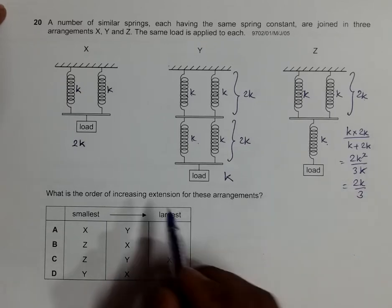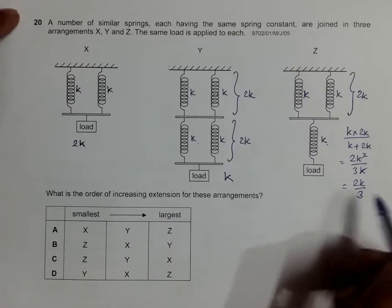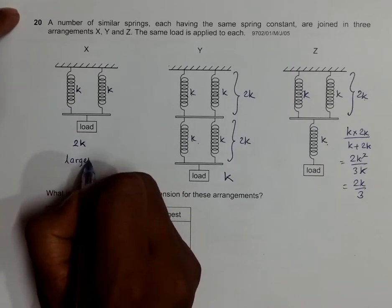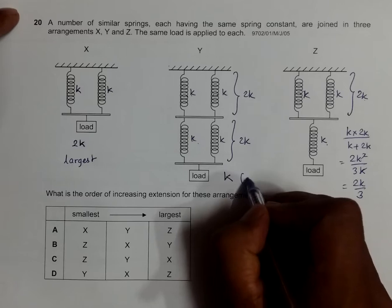So now as we compare the spring constants, this is the largest spring constant, this is medium, and this is the smallest value.